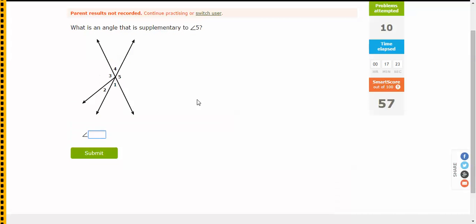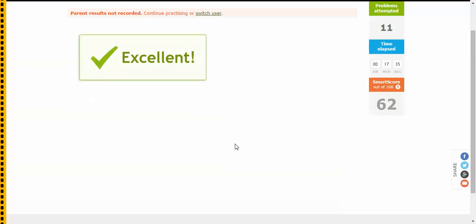So let's have a look. What is an angle that is supplementary to 5? There you go. So 5, I want to know what I can add to to make it up to a straight angle, which is a straight line. And I'm not guessing, I'm hoping the answer is 1. Fantastic.